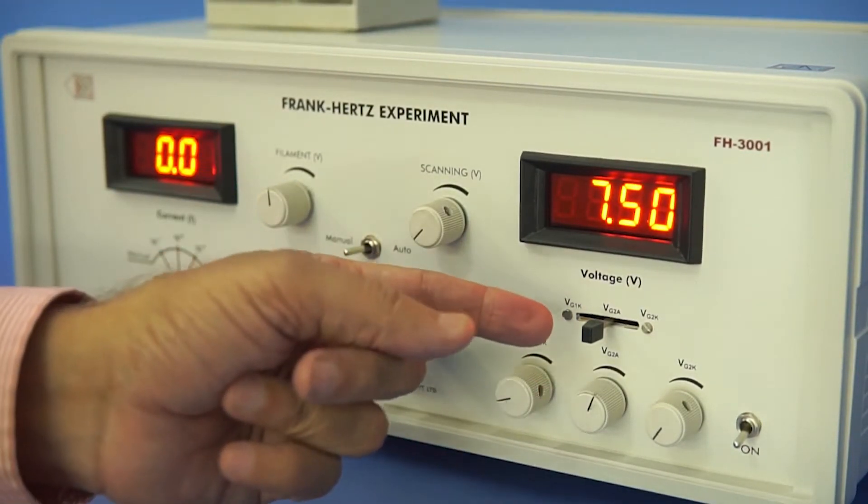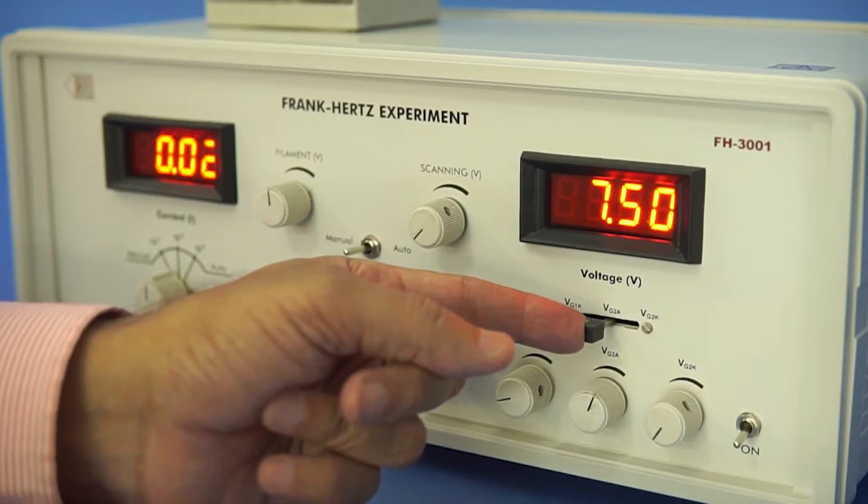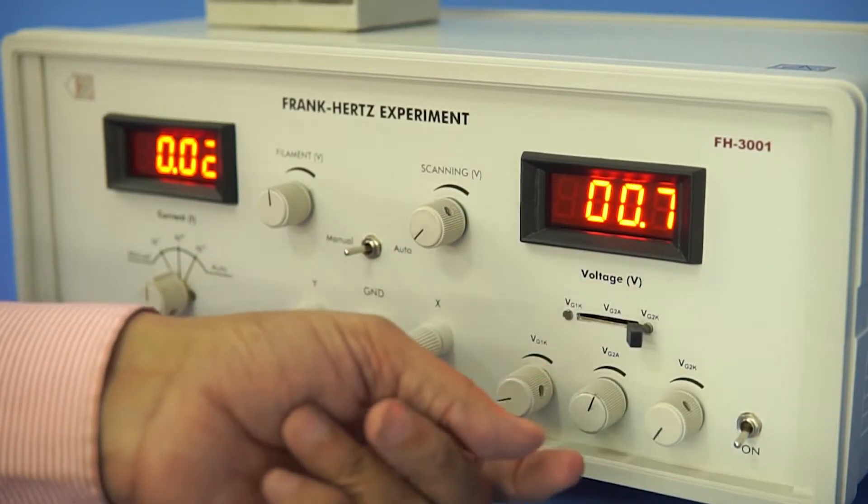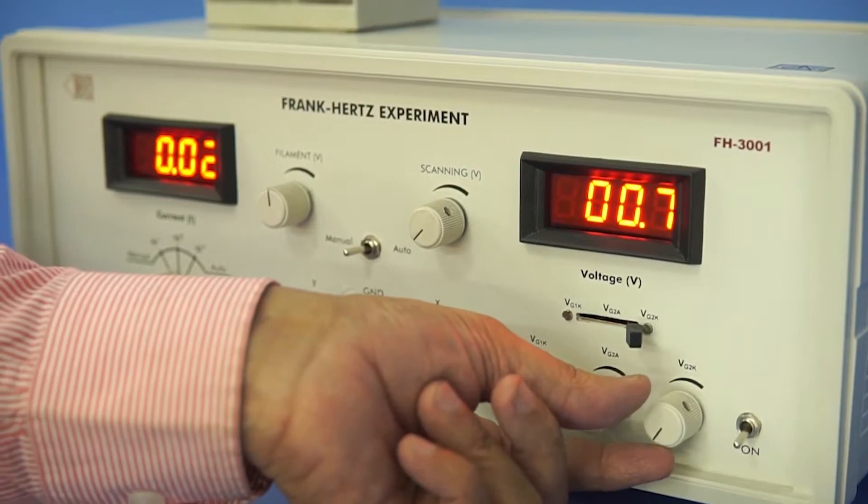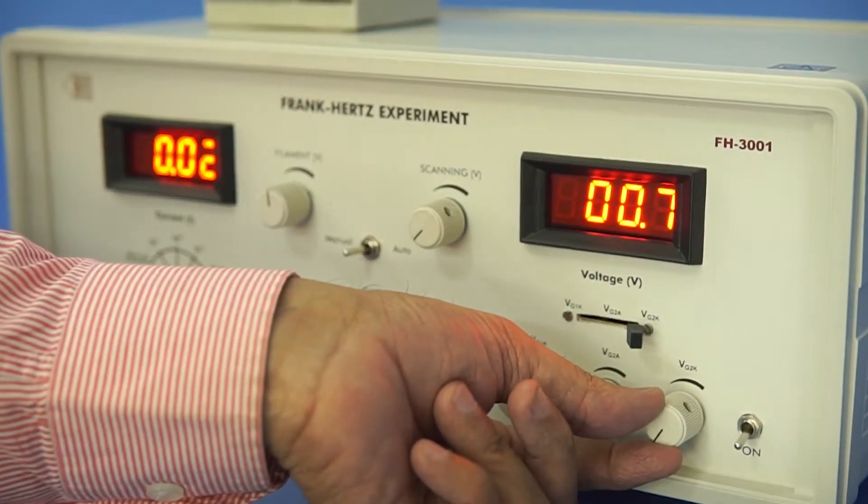Next, change the band switch position to VG2K. Now set the biasing voltage at minimum.